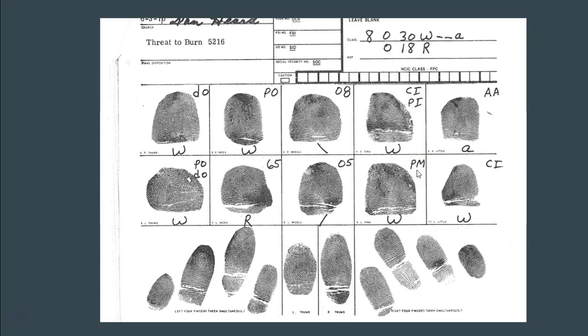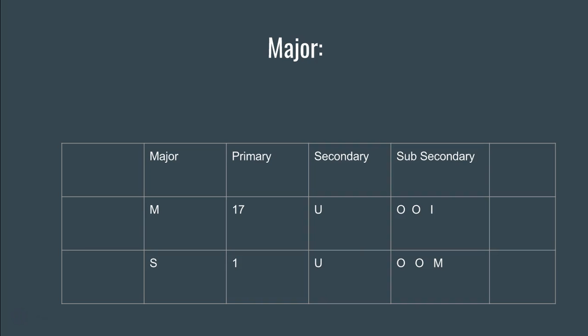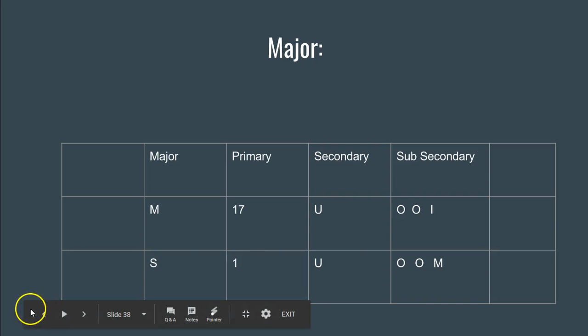That's how you do the sub-secondary — it's probably the most confusing part of the Henry system. In the next video, we're going to cover the last three parts of the Henry classification: the major, the key, and the final.